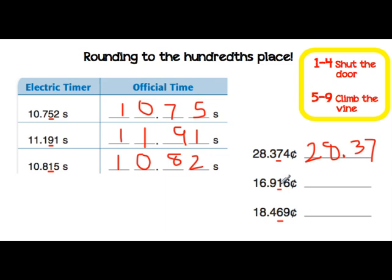Looking at the next problem, the underlined hundredths place is a 1. To the right of the 1 is a 6 — that fits in our 5 through 9, climb the vine. So our answer is going to be $16.92, changing the 1 to a 2, 92 cents.